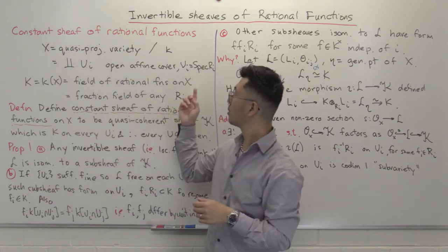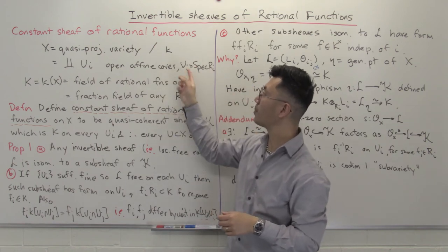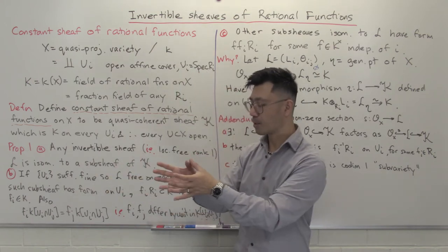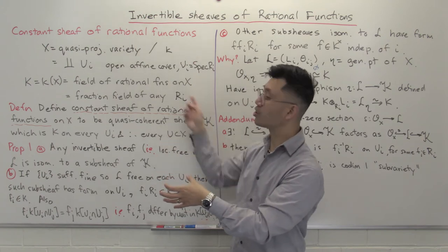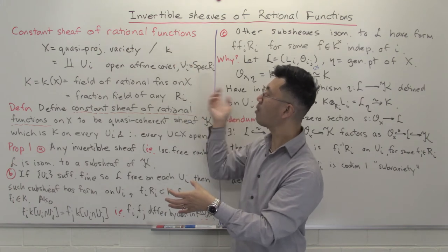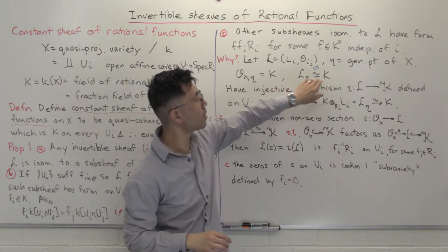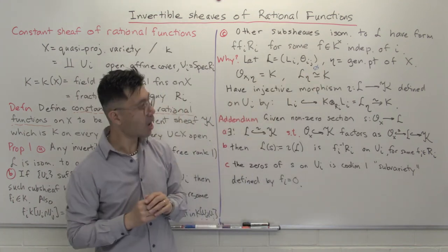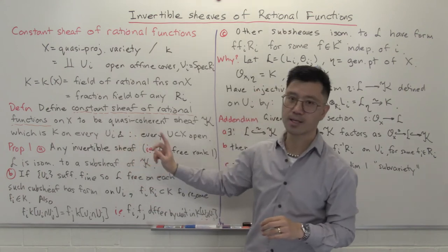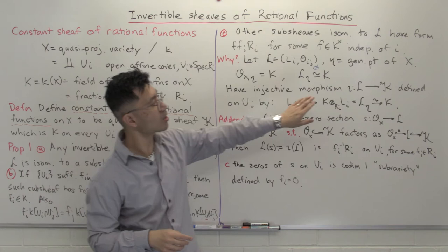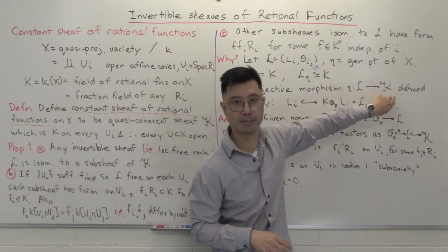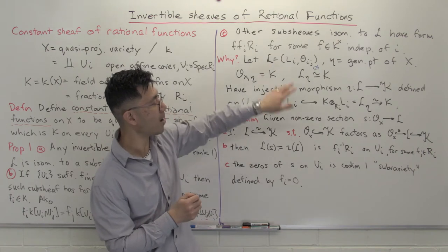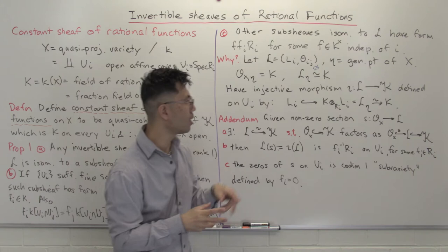Any of the U_i's will contain that generic point, and you take that free rank one module and look at its localization at the zero ideal. That gives you back k. So there's an isomorphism between L_η and k — but there are lots of choices; we'll just pick one at the moment and call it φ. To show that this invertible sheaf L is isomorphic to a sub-sheaf of K, I'm simply going to define an injective map ι from L to K.